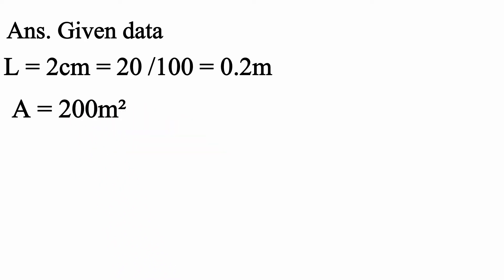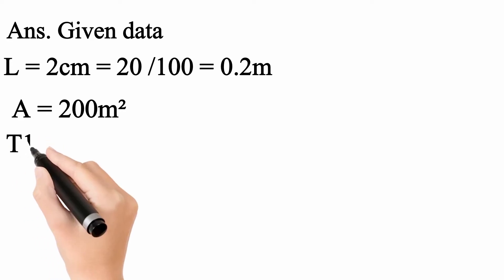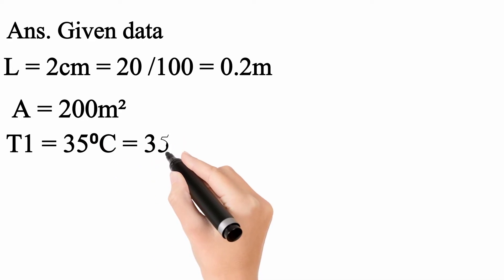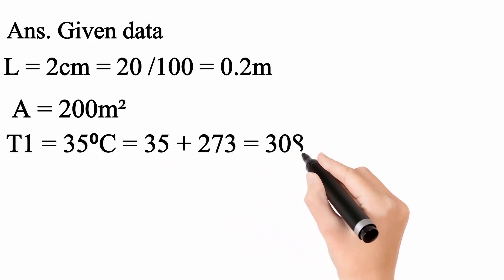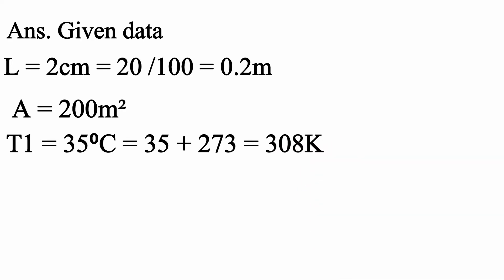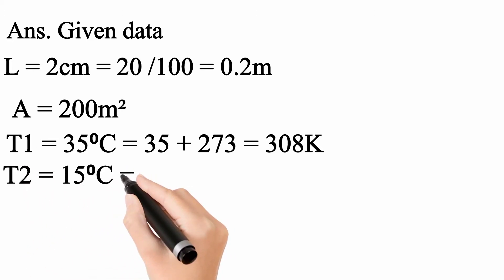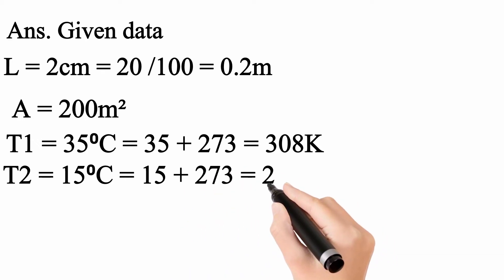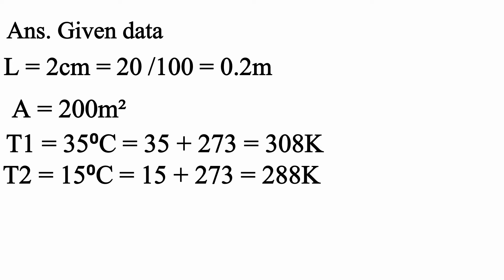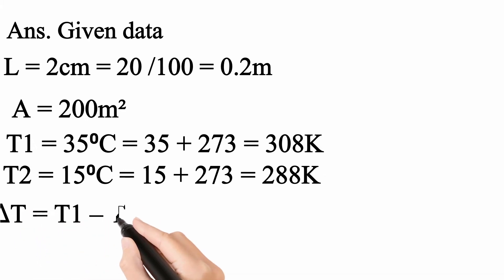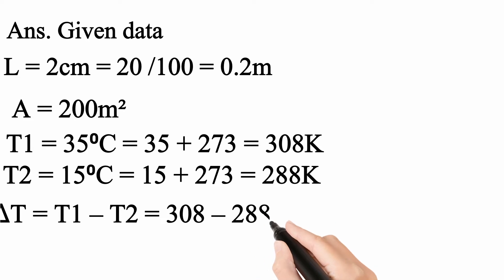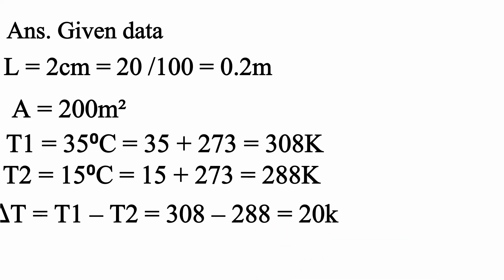Area दिया गया है: A = 200 m square। Temperature जो outside है वो T1 = 35°C है, इसको Kelvin में: 35 + 273 = 308 Kelvin। T2 जो inside है: 15°C, Kelvin में: 15 + 273 = 288 Kelvin। Delta T = T1 minus T2 = 308 minus 288 = 20 Kelvin।